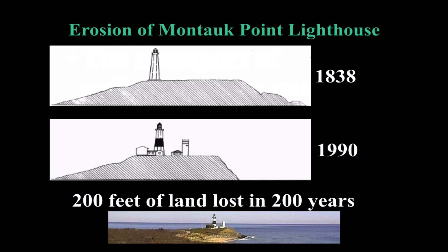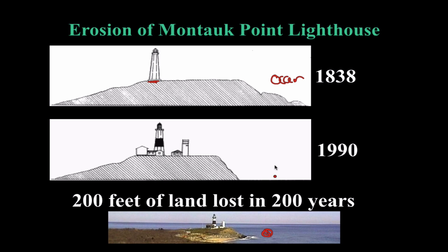Very close to home here — going to Montauk out on the east end of Long Island. This is what it looked like back in 1838. We can see the lighthouse right here and all this beachfront. This is the ocean at the end of the point, and from 1838 to 1990 there has been a massive amount of erosion. All this material right here has been swept away into the ocean.